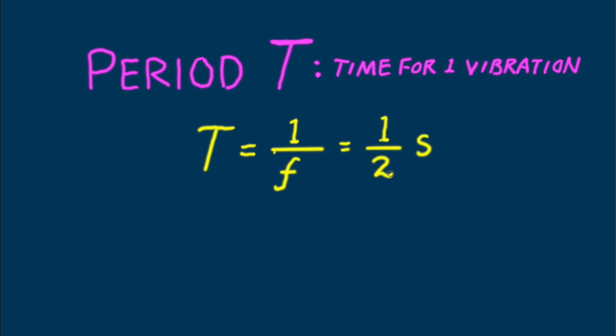Or if the vibration frequency is three hertz, then the period is one-third second. Both period and frequency are reciprocals of each other.